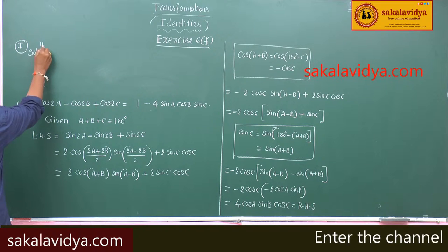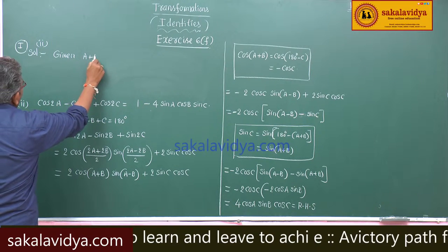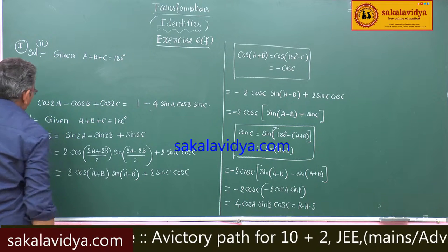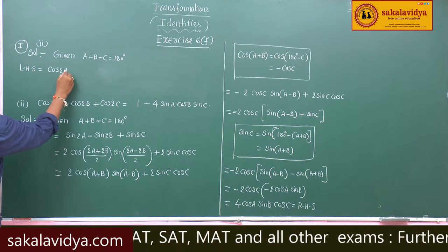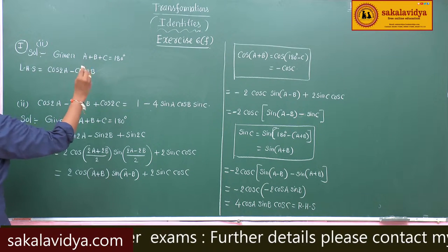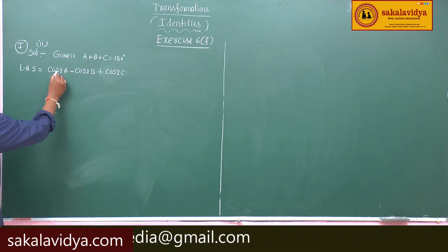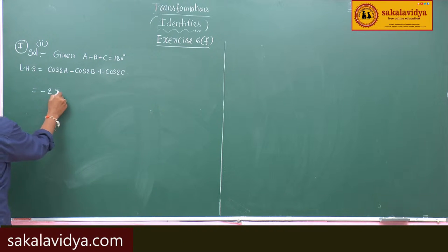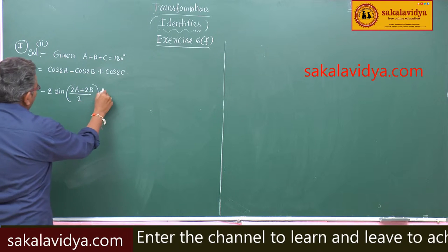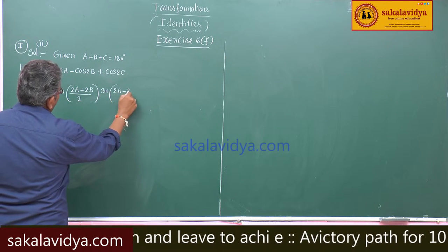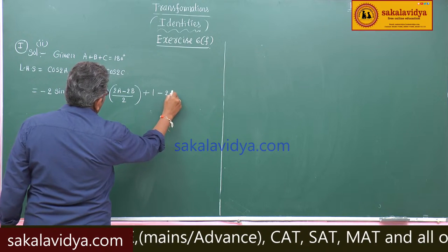Given A plus B plus C is equal to 180 degrees. Take left hand side: cos 2A minus cos 2B plus cos 2C. Using the formula cos C minus cos D equals minus 2 sin((C+D)/2) sin((C-D)/2), and we can write cos 2C as 1 minus 2 sin squared C.